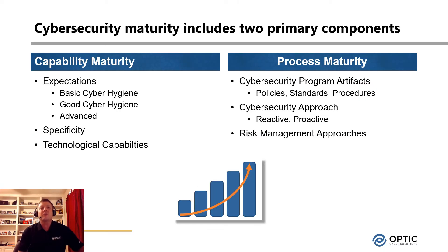As a quick overview of cyber maturity itself, cyber maturity is typically broken down into two separate components. The first being capability maturity — the types of practices or things that we need to do in our cyber security program to properly mitigate risks to our organization. Capabilities typically range from basic cyber hygiene up to advanced capabilities that get more specific as we go up through the capability model.